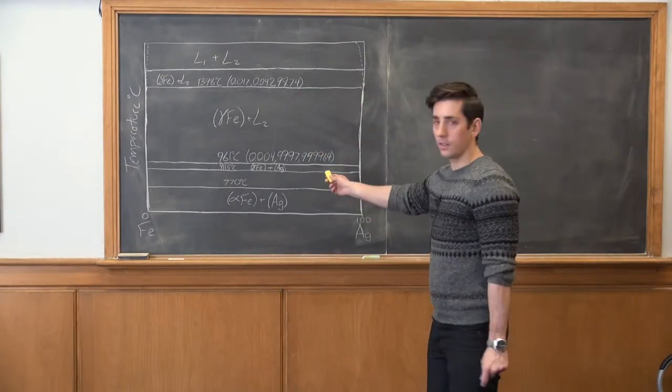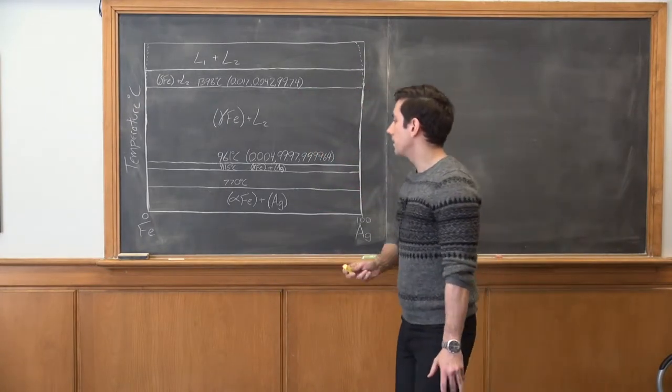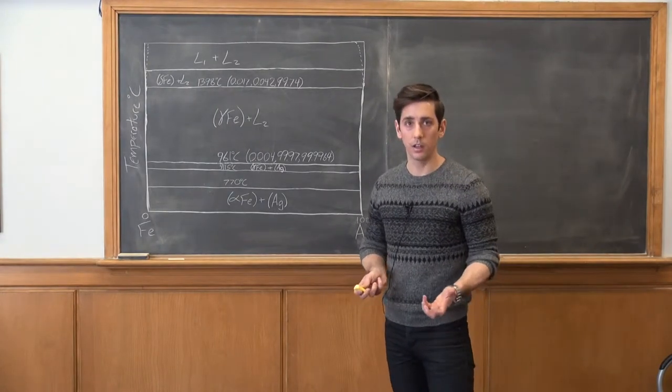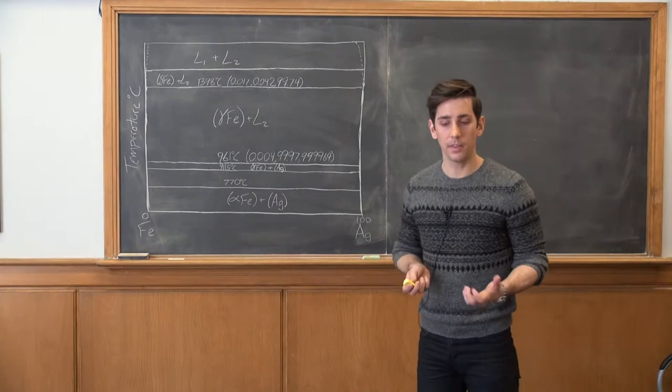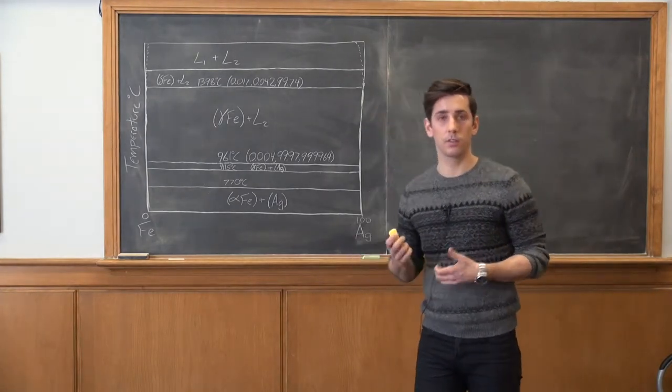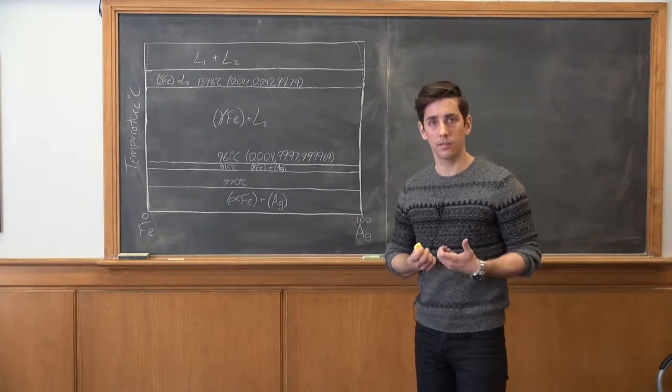So this is the phase diagram right here and our first step, you notice we're not given the alloy composition in this case, so we actually have to find that. So we can just find that by the relative masses of the silver and iron that are given in the problem.